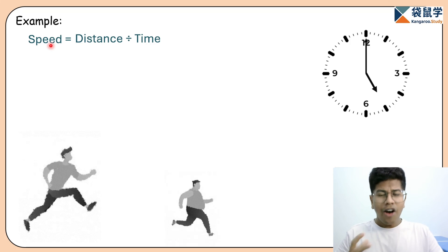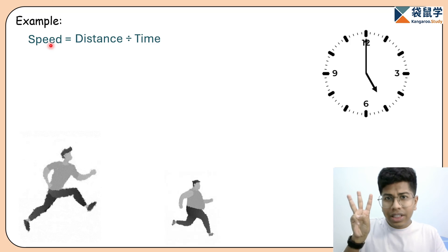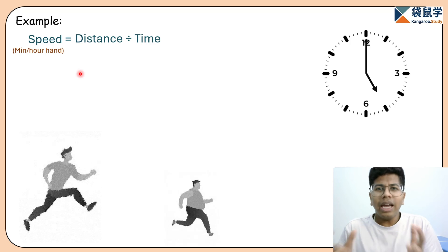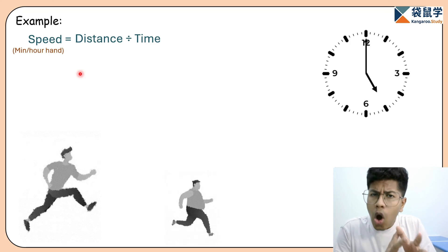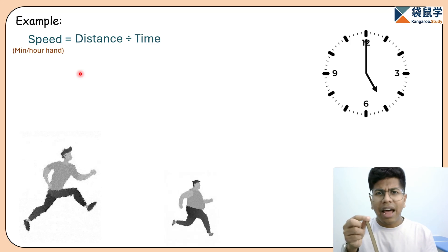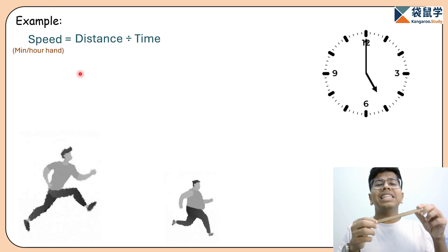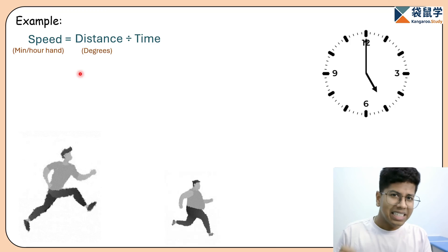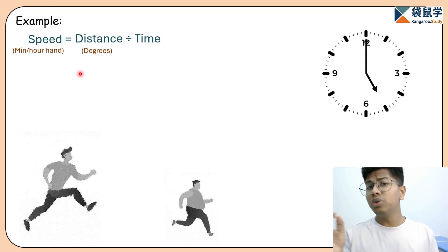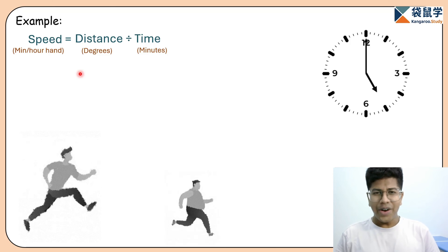In a clock there are three hands, but we are only concerned about two: the minute hand and the hour hand. Talking about distance — in travel problems, distance is in kilometers or meters — but in clock problems, the hands move in a circular direction, so the unit of distance is degrees. Time remains the same: hours, minutes, and seconds. To keep it standardized, we'll use minutes only.